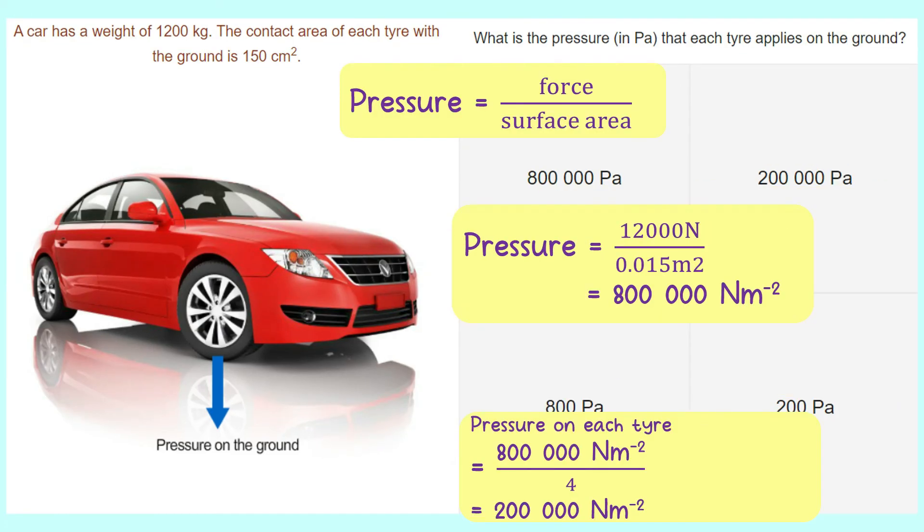And last one, what is the pressure that is exerted on each tire that applies on the ground? We can use the formula of pressure equals to force divided with surface area. From the previous calculation, we found that the force of the car is 12,000 Newton, and the surface area for each tire is 0.015 meters square.